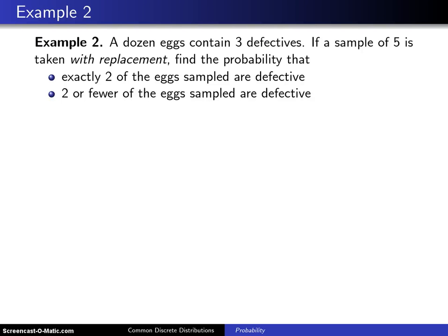A dozen eggs contains three defectives. If a sample of size 5 is taken with replacement, find the probability that exactly two of the eggs sampled are defective. Find the probability that two or fewer of the eggs sampled are defective.